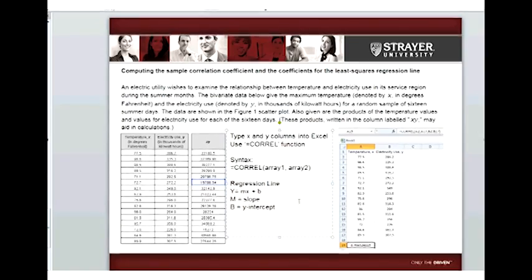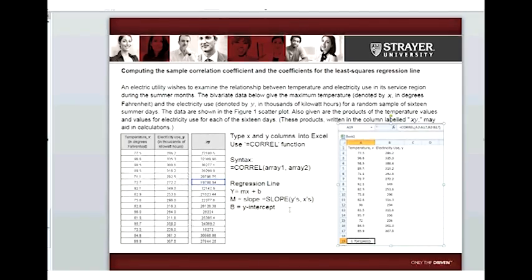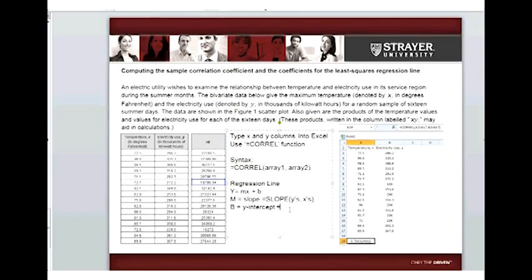The slope, we're going to say equals slope parentheses, and the Y's comma X's. So we'll highlight just the column of Y's, and then the column of X's. And the Y intercept, that formula is intercept,